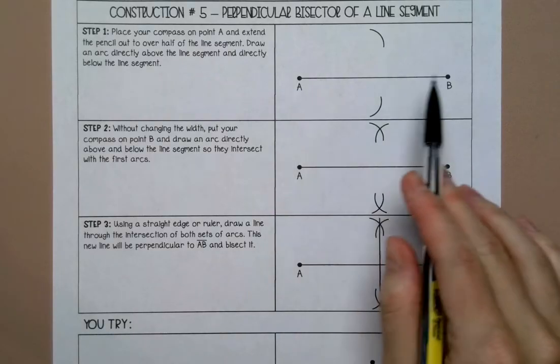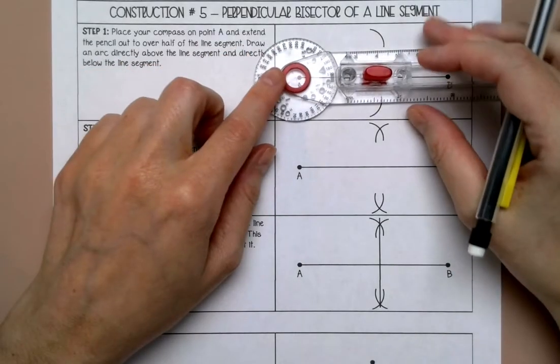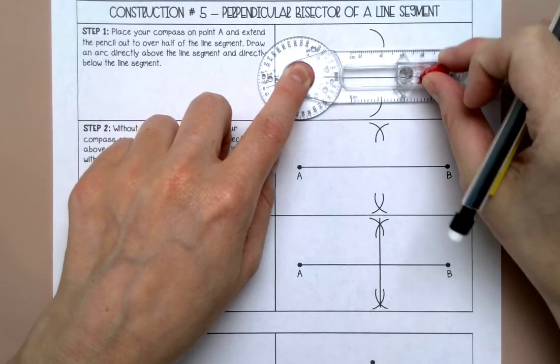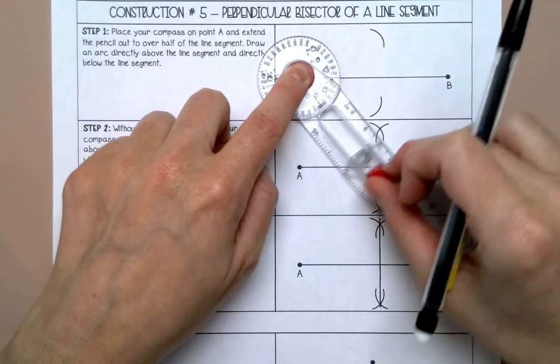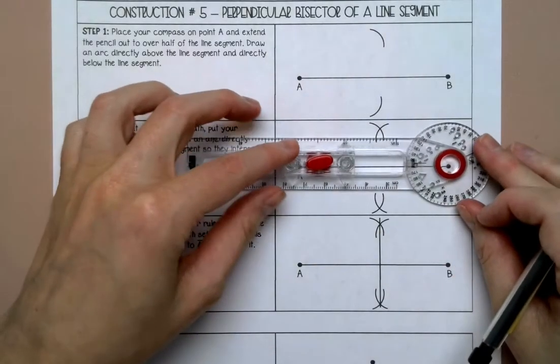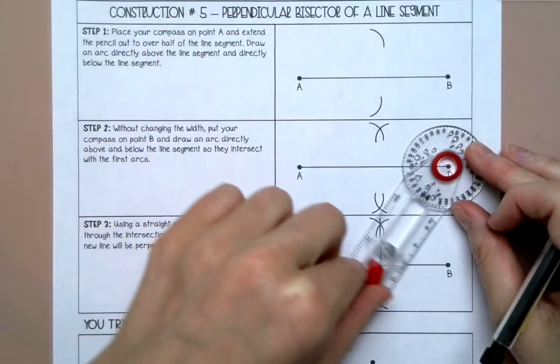So I have a line segment AB. I'm going to place my compass on A and extend my compass out to over halfway, and I'm going to draw an arc above and below. Then without changing the width, I'm going to do the same thing from B above and below.